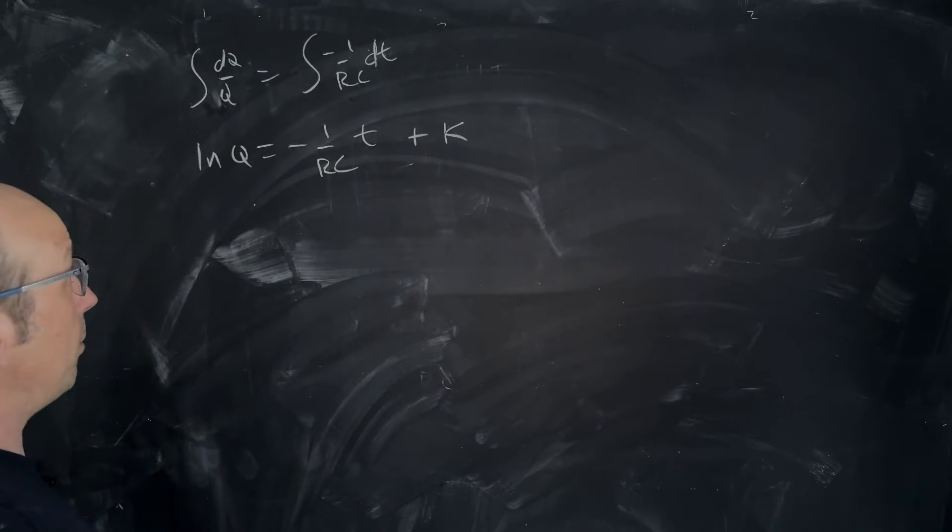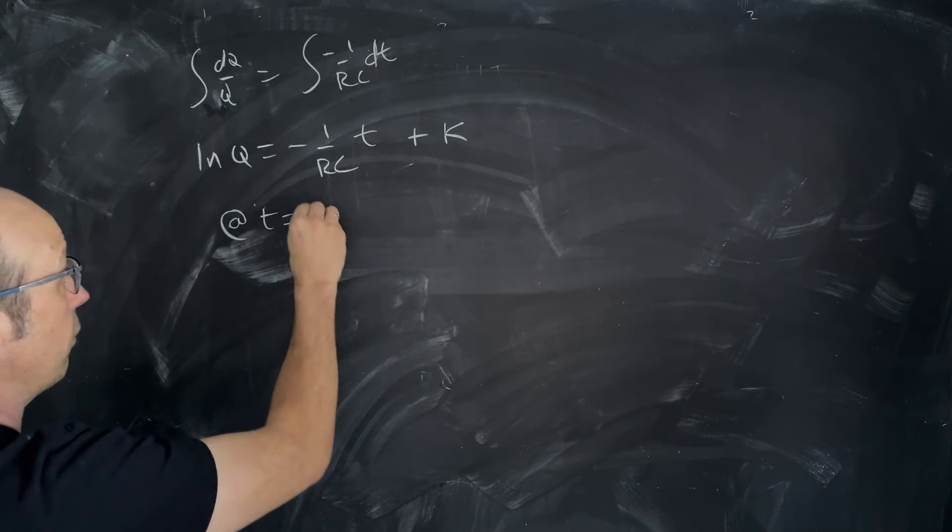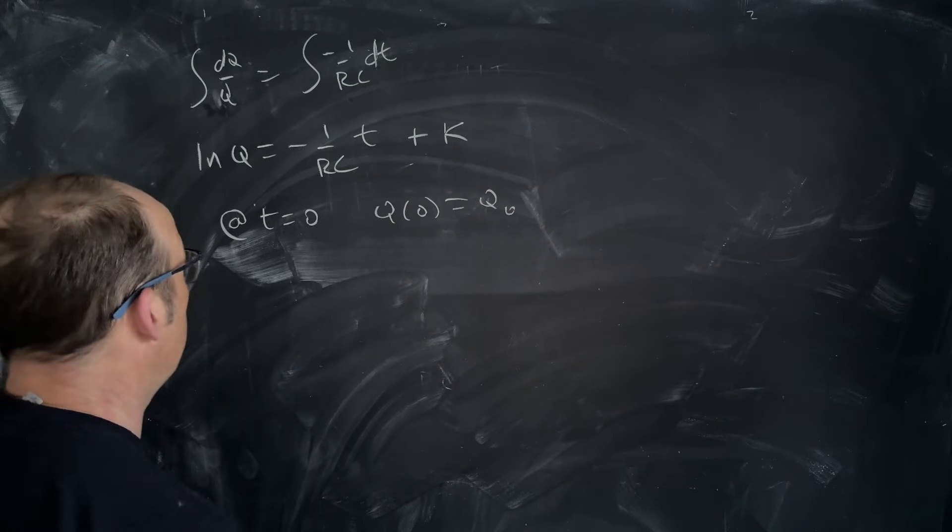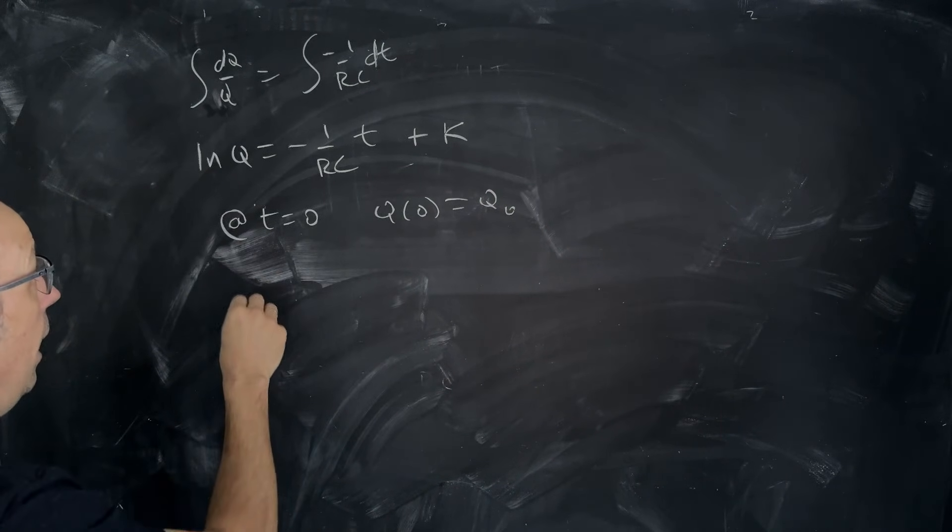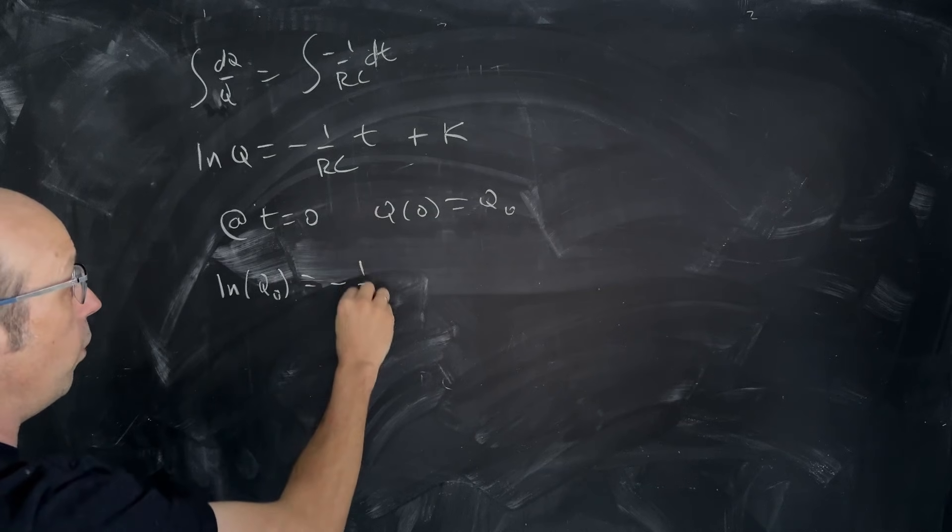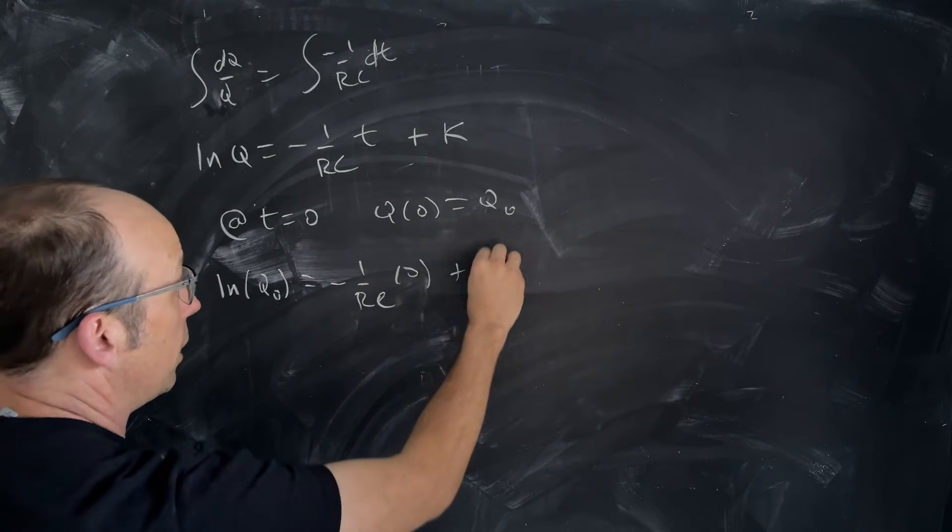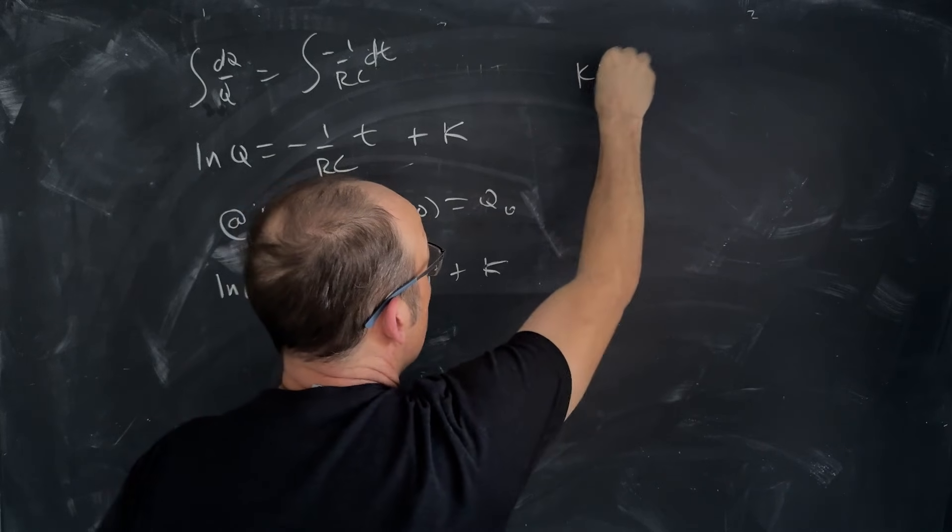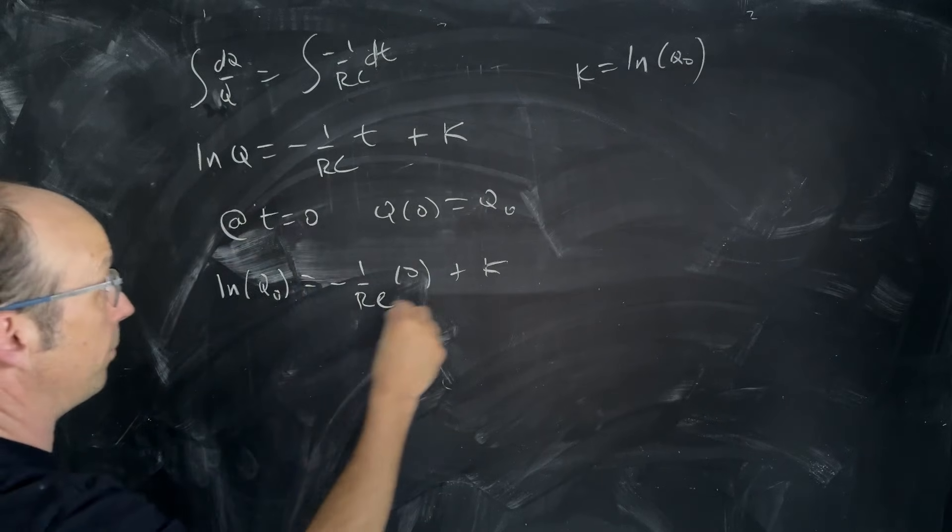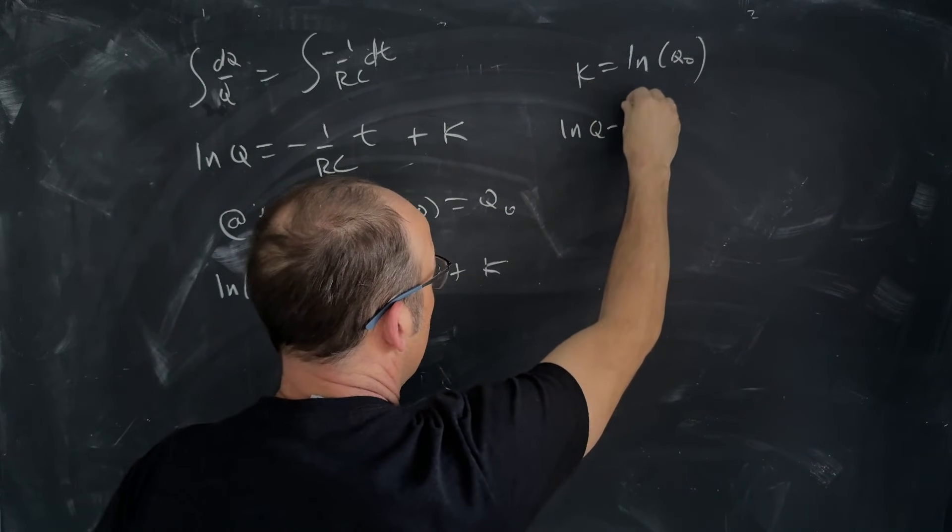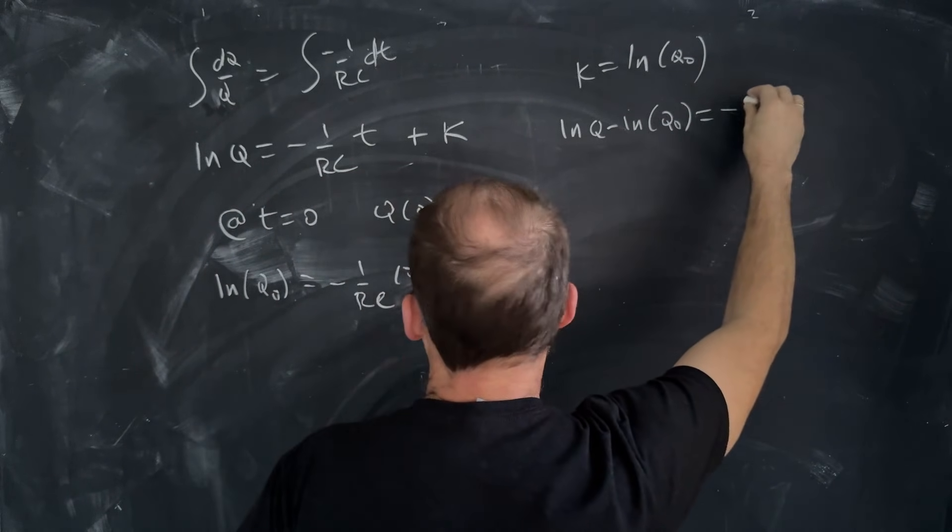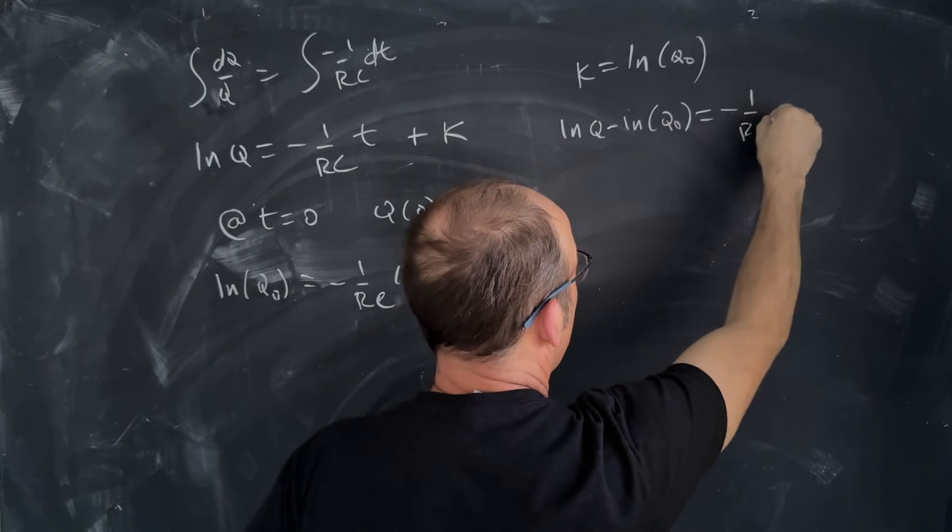Well, we can find that constant by applying our initial conditions. At t equals 0, Q of 0 is Q0. That's the initial charge on the plate. So I'm going to put in t equals 0. So that's ln of Q0 equals negative 1 over RC times 0 plus k. So k is equal to the natural log of Q0. Now, if I put that back in and subtract it from the other side, I get natural log of Q minus natural log of Q0 equals negative 1 over RC times t.